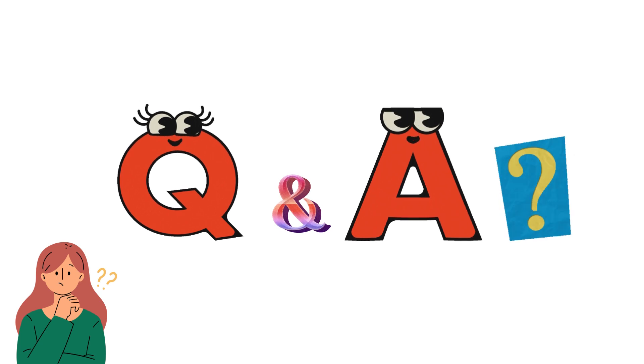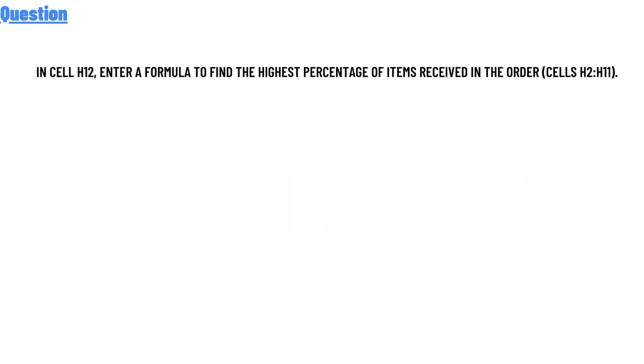Our question is: in cell H2, enter a formula to find the highest percentage of items received in the order cells H2:H11.